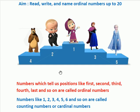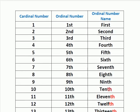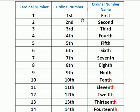For example, how many participated in the running race? Here, 5 participated in the running race. So ordinal numbers tell us the position, whereas cardinal numbers tell us how many. Now we will learn the cardinal number, ordinal number and ordinal number name for the numbers from 1 to 20.